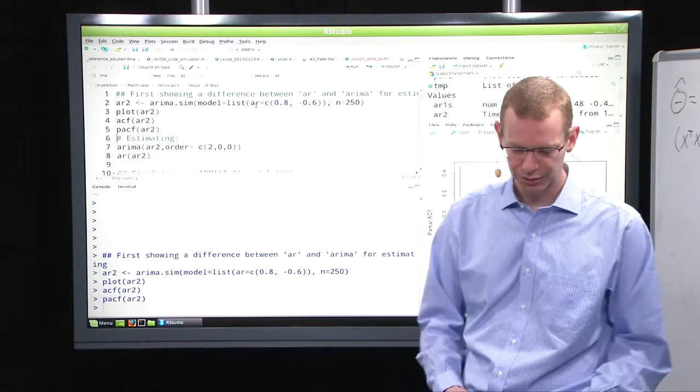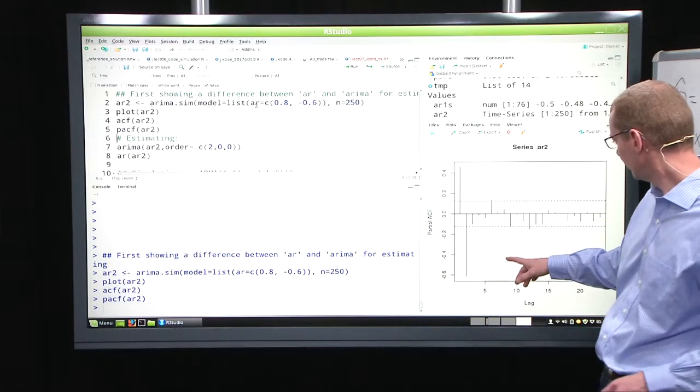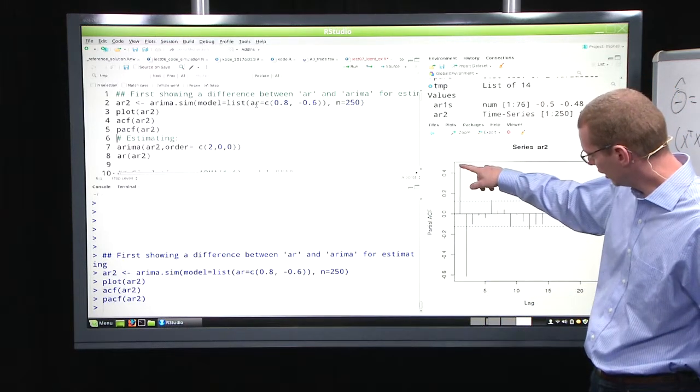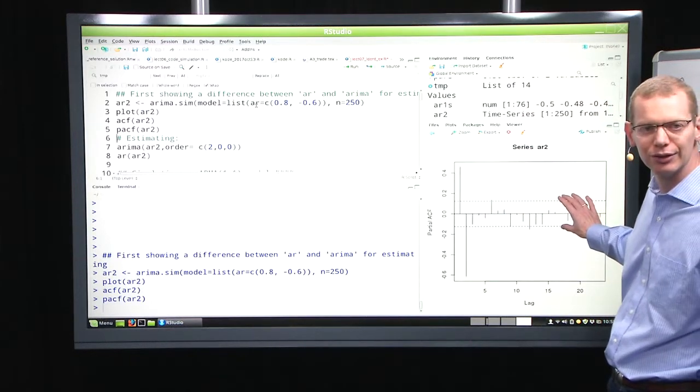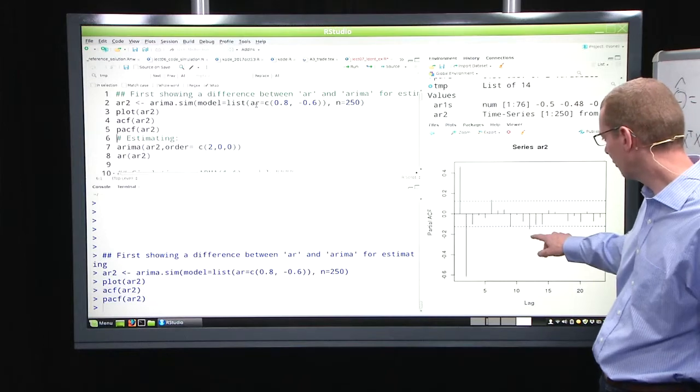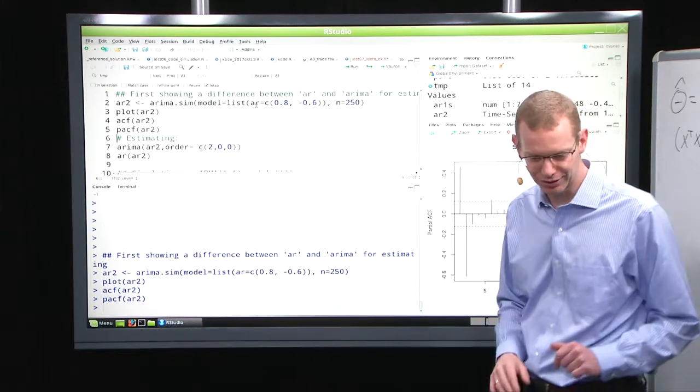And if I plot the partial autocorrelation function, then you can see that there is something significant in lag 1 and lag 2, and then there is some noise out here. A couple of them are just significant.